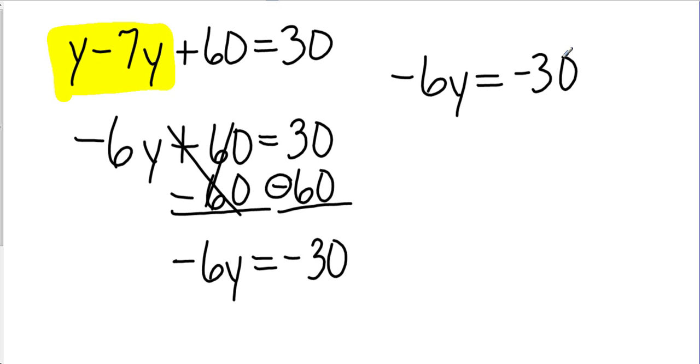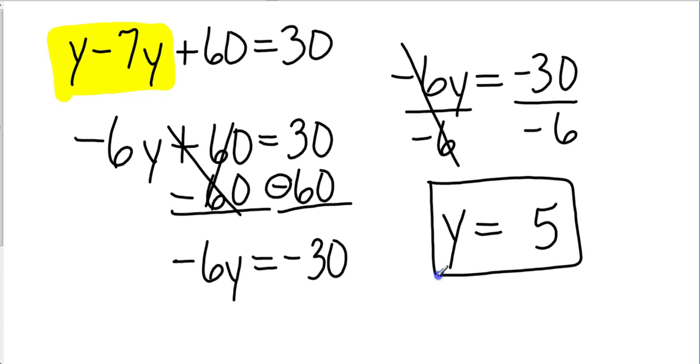The negative 6 and the y are multiplying each other. I'm going to divide both sides by negative 6. Negative 30 divided by negative 6. Let's just look at the numbers first. 30 divided by 6 is 5. Count up the negative signs. There are two of them. So, that makes my answer positive. I end up with y equals 5. And that is multi-step or two-step equations. We'll see you tomorrow.